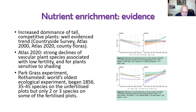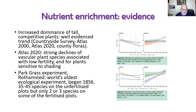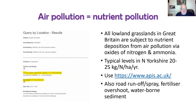Worth mentioning is the Park Grass Experiment at Rothamsted Institute — the world's oldest ecological experiment. A big field was divided into plots in 1856 and has been managed and monitored ever since. Initially it was an agricultural experiment on the effects of manures, limes, and fertilizers on hay production. Some original plots that have never had fertilizer have 35–45 species; some heavily fertilized plots now have only two or three species — showing clearly the effect of adding nutrients.